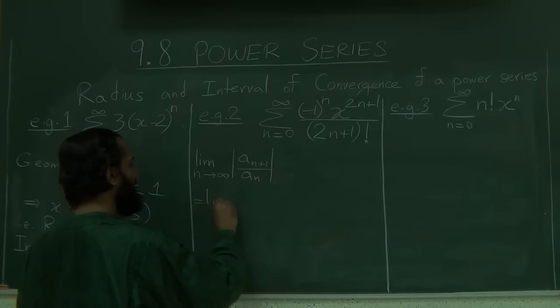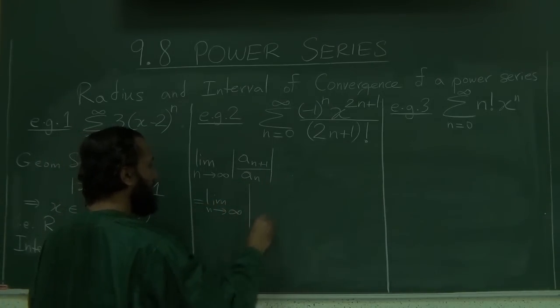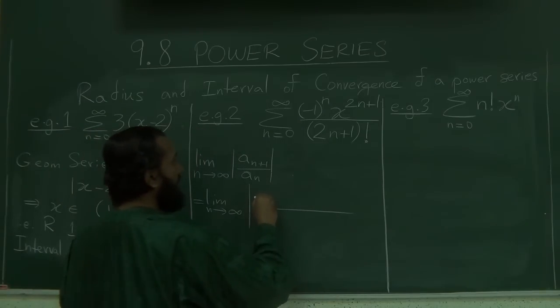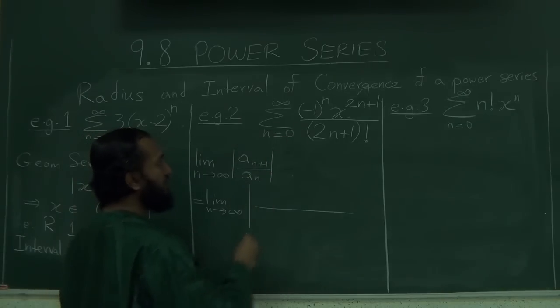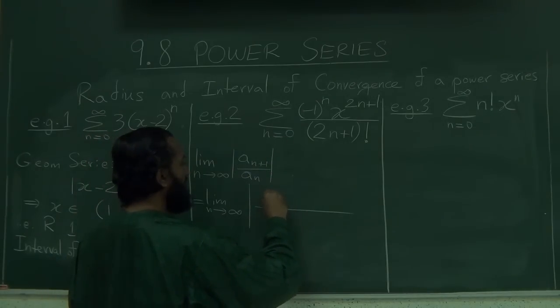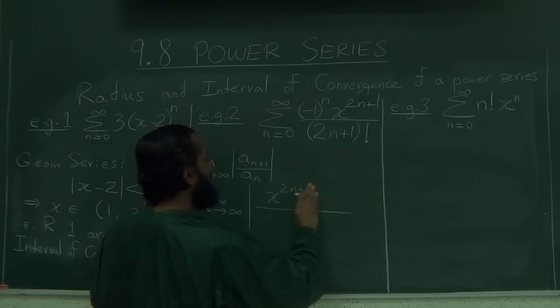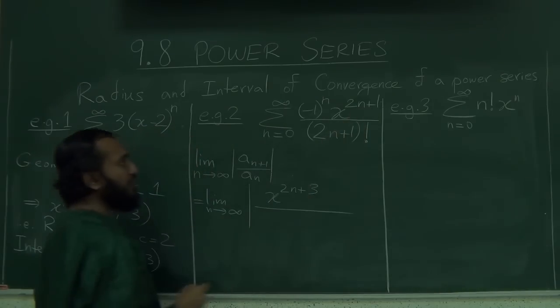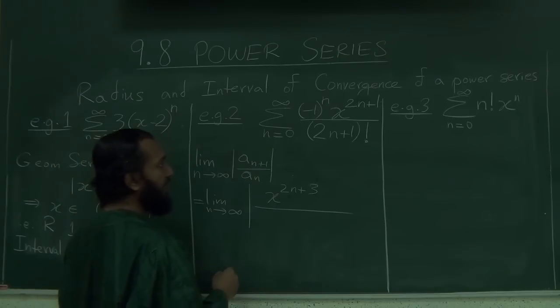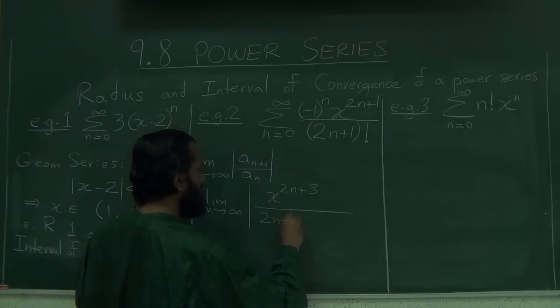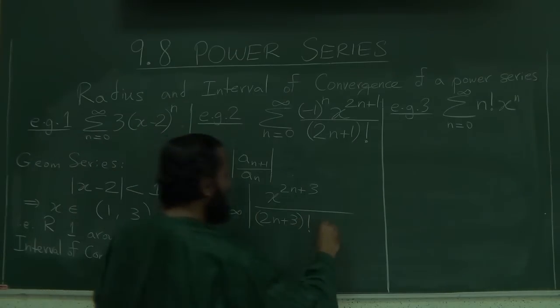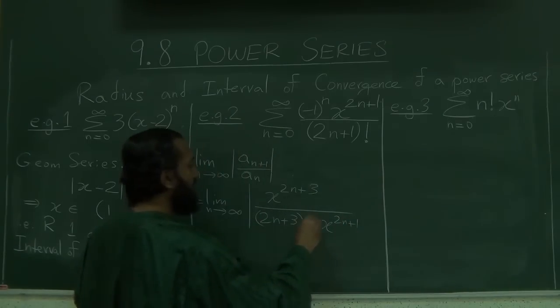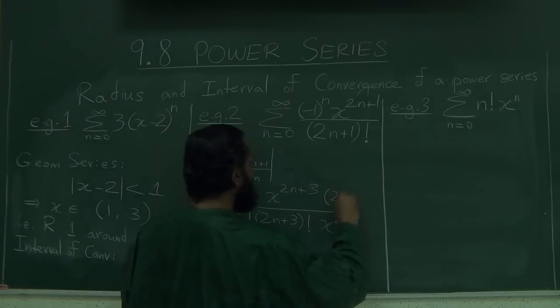So let's look at it here. This is the limit as n goes to infinity. We're going to take absolute values, so forget about the minus signs. So we're going to have x to the 2n plus 2, actually, sorry, n plus 1, 2n plus 3. We're going to plug in n plus 1 here, 2n plus 2, plus 1 whole is 2n plus 3, and over 2n plus 3 factorial, divided by a_n, so the x 2n plus 1 will come here, and then the 2n plus 1 will come here.